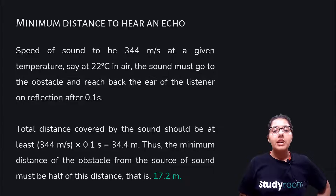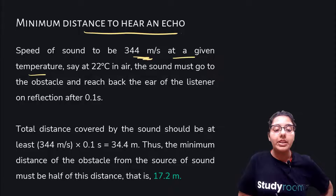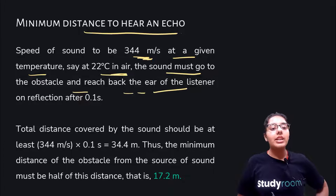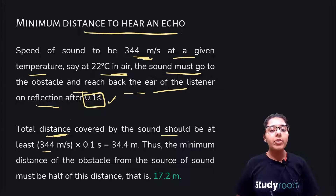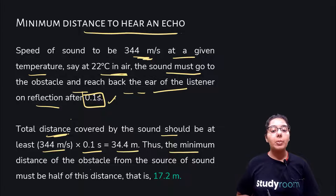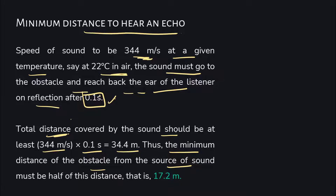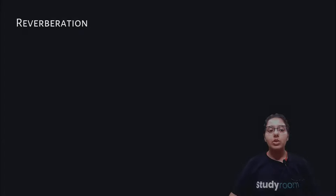What is the minimum distance to hear an echo? Taking the speed of sound as 344 meters per second at 22 degrees Celsius in air, the sound must go to the obstacle and reach back to the ear of the listener on reflection after 0.1 seconds. Total distance covered is speed into time: 344 × 0.1 = 34.4 meters. Thus the minimum distance of the obstacle from the source must be half of this — half of 34.4, which is 17.2 meters. That is the minimum distance to hear an echo.